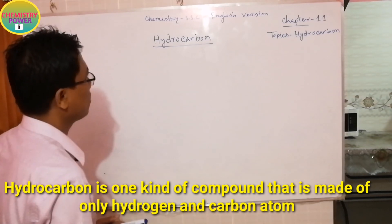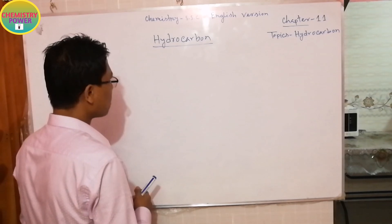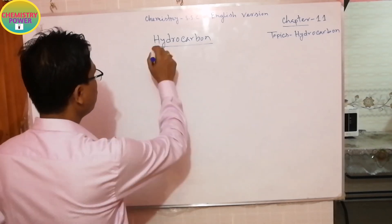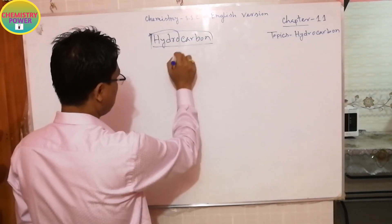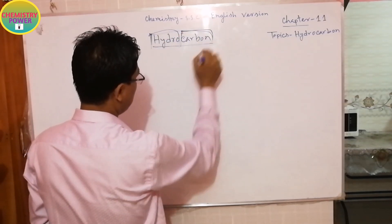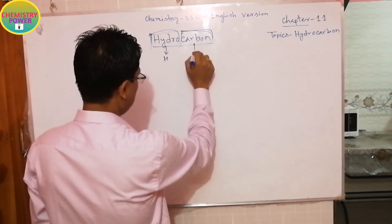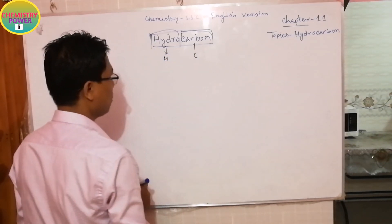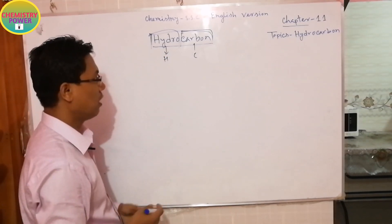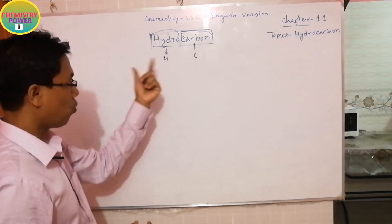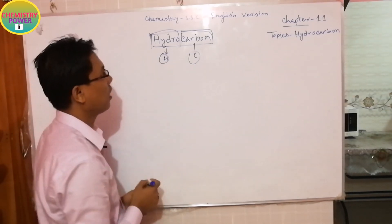If you observe the word 'hydrocarbon', you can see it has two parts. One part is 'hydro' and the other part is 'carbon'. Hydro means hydrogen and carbon means the carbon element. So we can say the definition of hydrocarbon is: a compound that is made only of hydrogen and carbon elements.